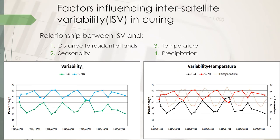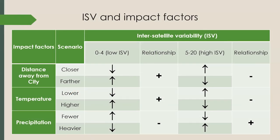This leads us to the next conclusion. We observed that when inter-satellite variability is low, there is a negative correlation with precipitation and a positive correlation with distance and temperature. Vice versa for when ISV is high.